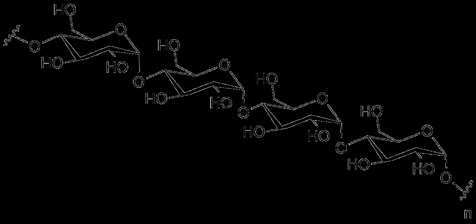Chitin has a similar structure, but has nitrogen-containing side branches, increasing its strength. It is found in arthropod exoskeletons and in the cell walls of some fungi. It also has multiple uses, including surgical threads.